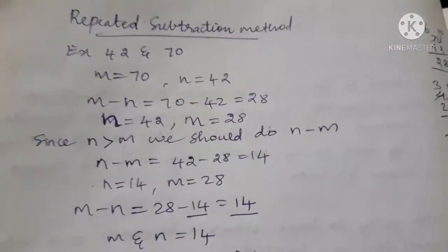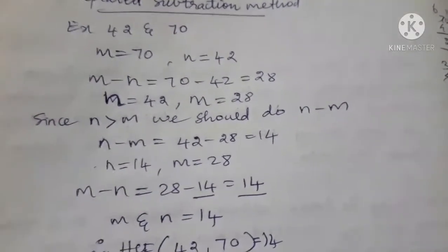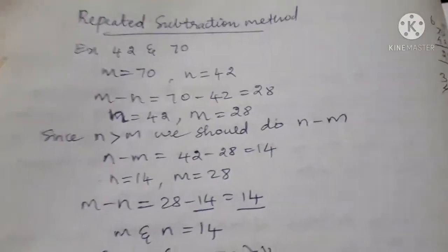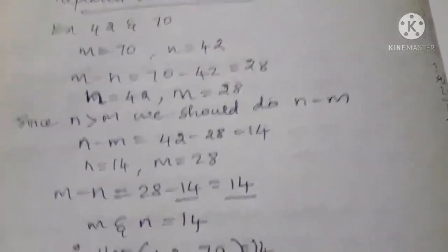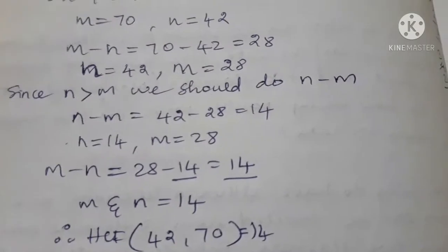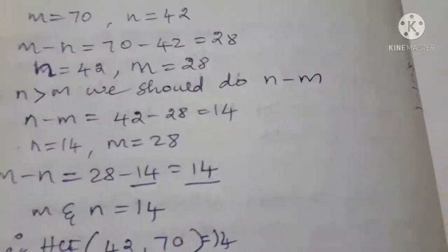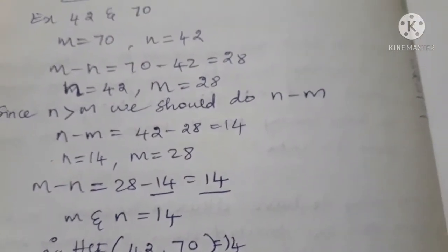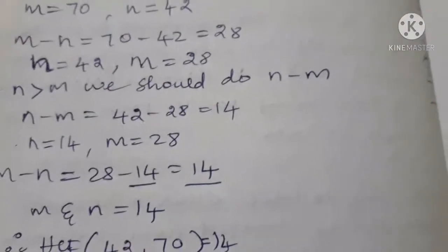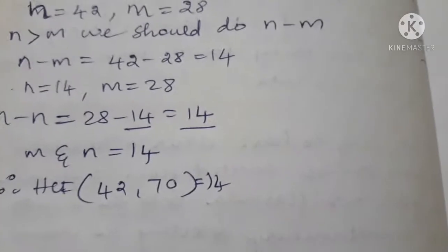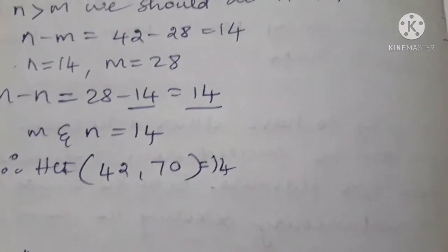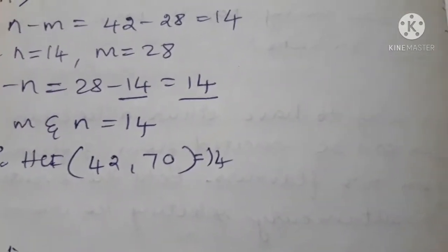The next one is the repeated subtraction method, which is also very, very easy. For example, 42 and 72 are given and you are going to do repeated subtraction. The bigger number should be taken as M and the smaller number should be taken as N. There is a rule: always the number which is greater should be first, the number which is smaller should be second.